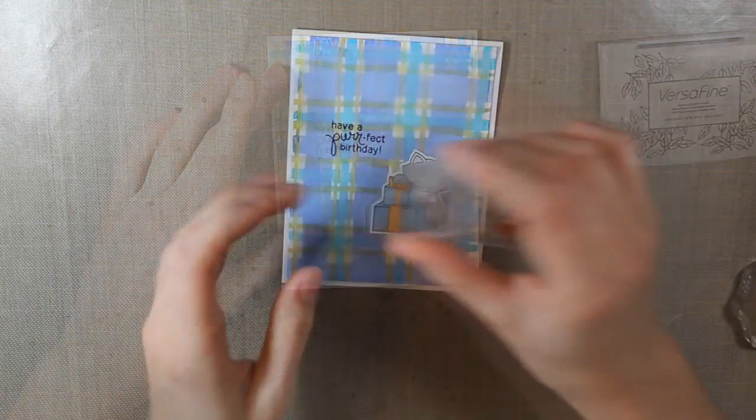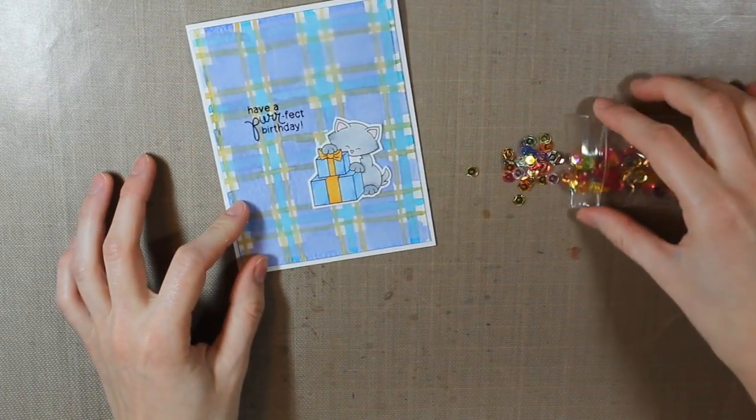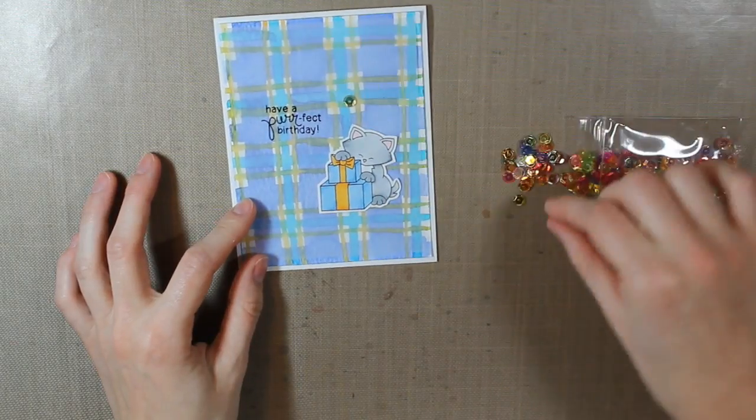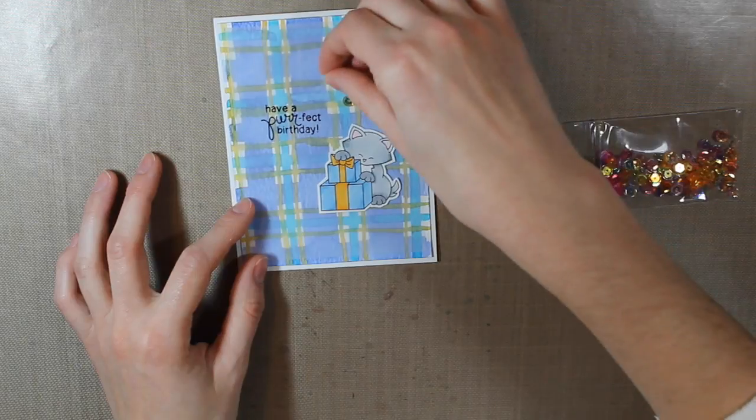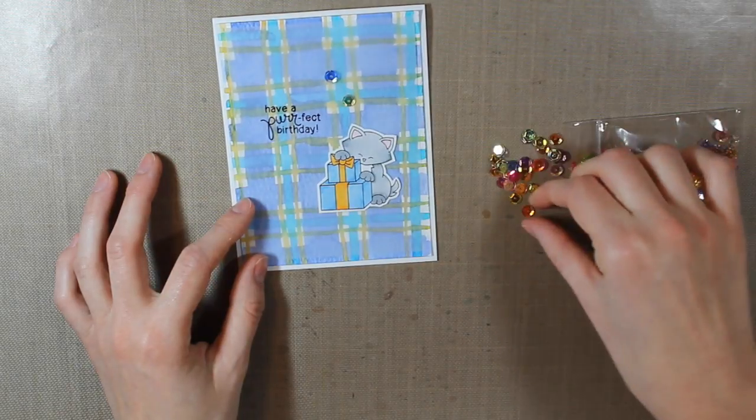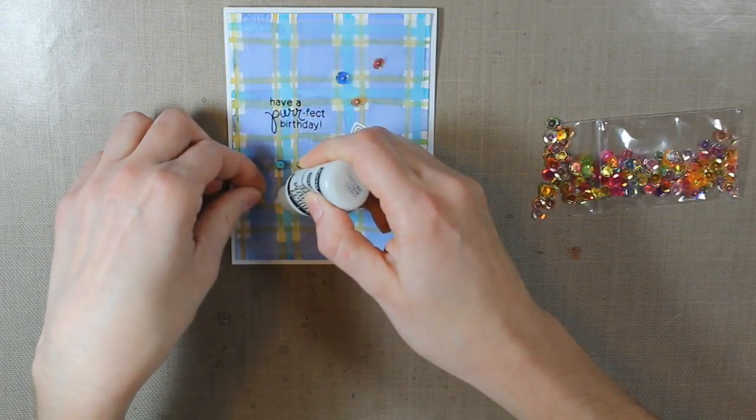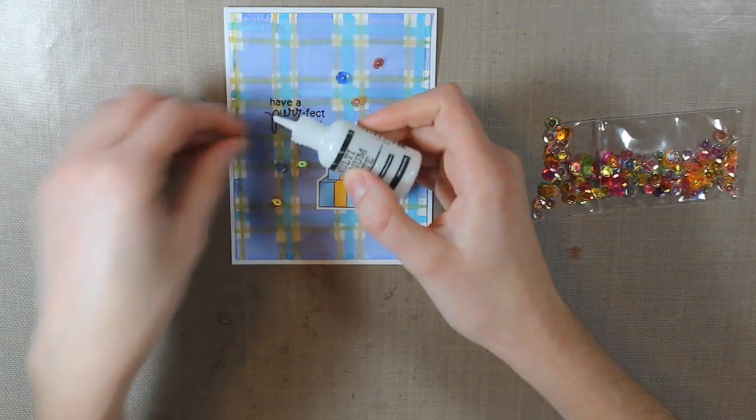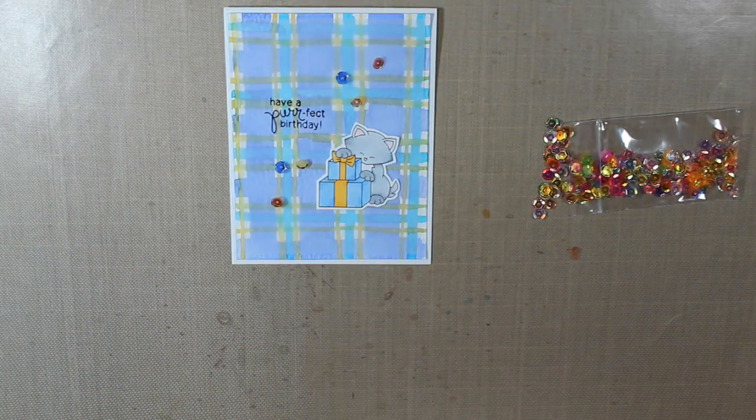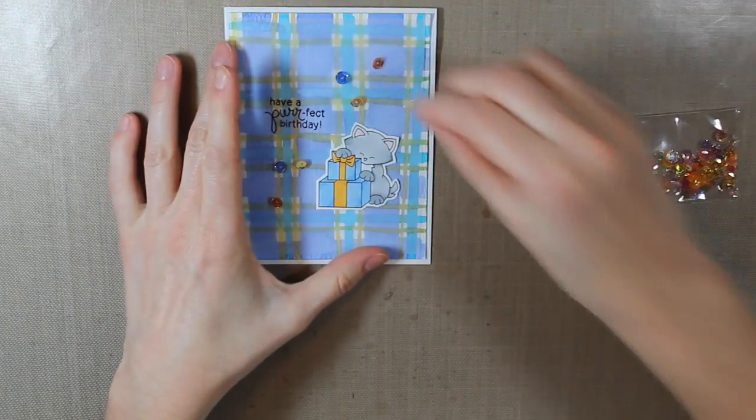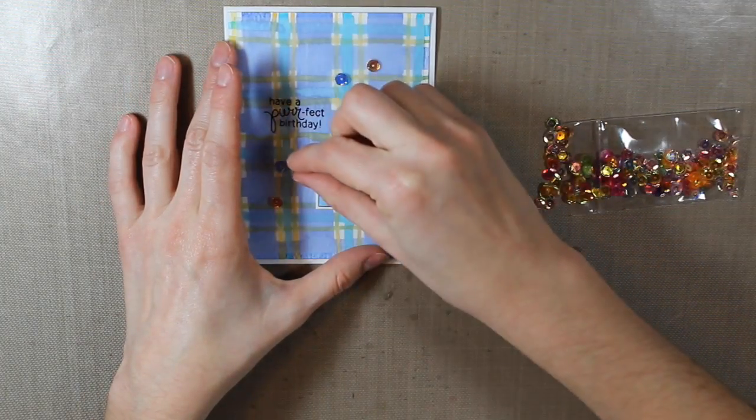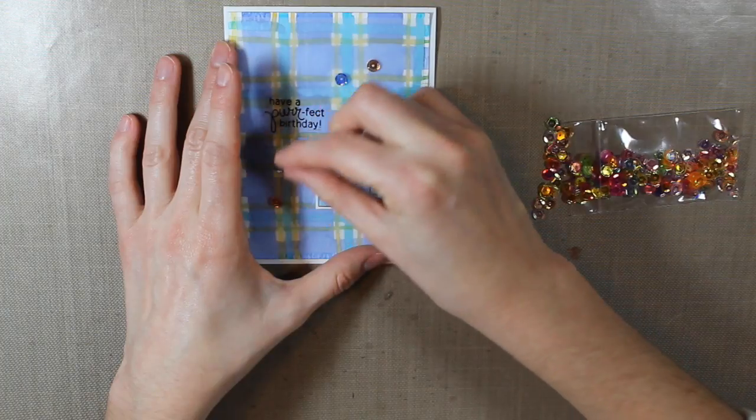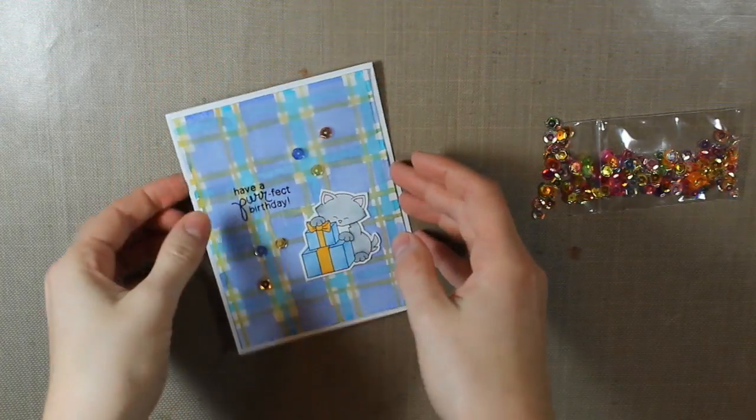And then my final step on this card, I'm going to be adding a few sequins. This is the Electric Mix from Mint Owl Studio. These sequins are gorgeous. They are so sparkly and shiny and they come in really bright colors. So I'm just adhering those down with my multi-medium in the matte finish. I squirt down a little bit of the glue and then press each of the sequins down into the adhesive.